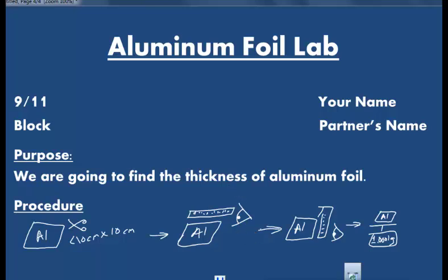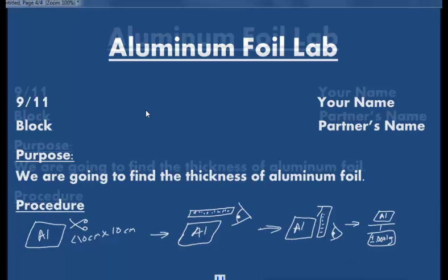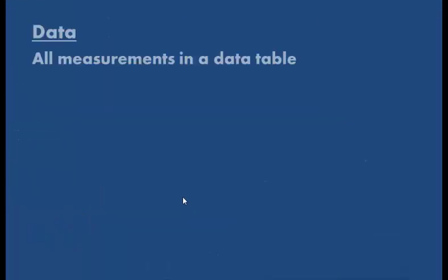The next thing that's in your lab notebook says data. And when you get the data from the lab, you're going to make sure they're all in a data table, and all of them are to the correct number of sig figs, and all of them have units after them. So be sure you put them in a data table. Make sure they have units, and make sure they're up to the correct sig figs. I will be looking very carefully at how that data table is put together.